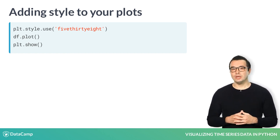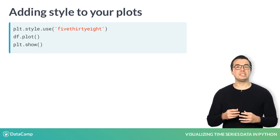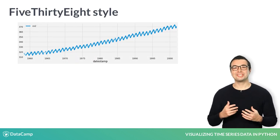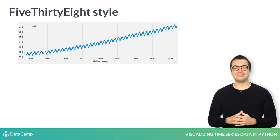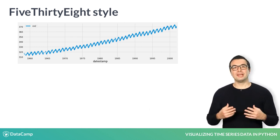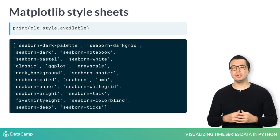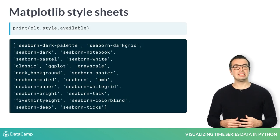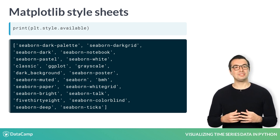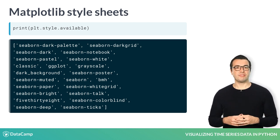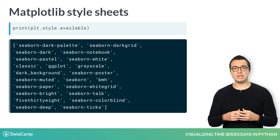In this case, we opted to use the famous 538 style sheet. As you can see, the plot looks a lot better. If you are interested in looking at the list of available styles in matplotlib, you can use the plt.style.available command to display all options. Several well-known graphic styles such as 538, ggplot, and even the Financial Times are included in a default matplotlib installation.